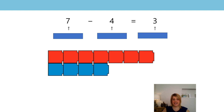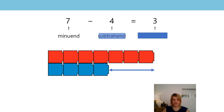What about this example now? There are seven red cubes and there are four blue cubes. What's the difference? The equation is seven subtract four equals three. Can you tell me which is the minuend, which is the subtrahend, and which is the difference? The minuend is the seven red cubes, the subtrahend is the four blue cubes, and the difference is shown by the arrow — that's three. There are three fewer blue cubes than there are red, and three more red cubes than blue.